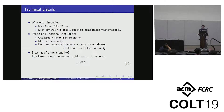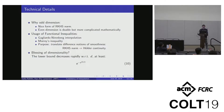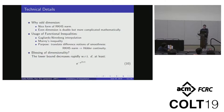Why do we choose odd dimensions? In odd dimensions, we have a very nice form of the RKHS norm, which is not the case in even dimensions. We believe it is still possible to prove the result in even dimensions, but it would require more tools from harmonic analysis. We also use functional inequalities such as the Gagliardo-Nirenberg interpolation inequality and Morrey's inequality. The purpose of these inequalities is to translate different notions of smoothness from the RKHS norm all the way to Hölder continuity.